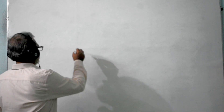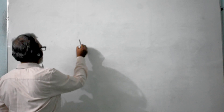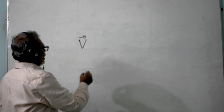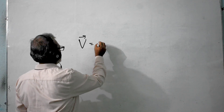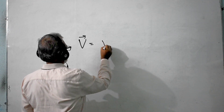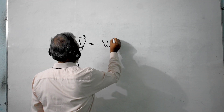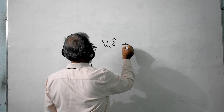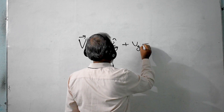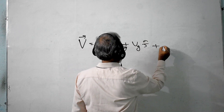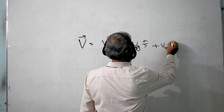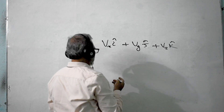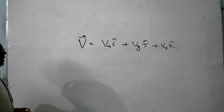We have to see what is divergence, what is gradient, and what is curl. We all know vector V is represented and written like this. Vector V has three components, so in terms of components we write it as: Vx·i plus Vy·j plus Vz·k.